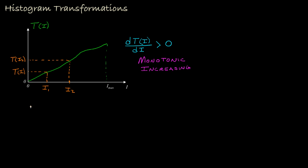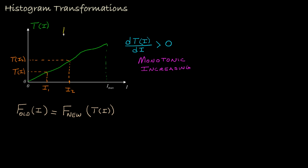A consequence of this property is that if we look at the cumulative frequency distribution for our original image, that will be equal to the cumulative frequency distribution for our new image, but not evaluated at an intensity I, but evaluated at the transformed intensity I. Our relationship between the new image intensity and the old image intensity would be: the new image intensity is the old image intensity transformed.